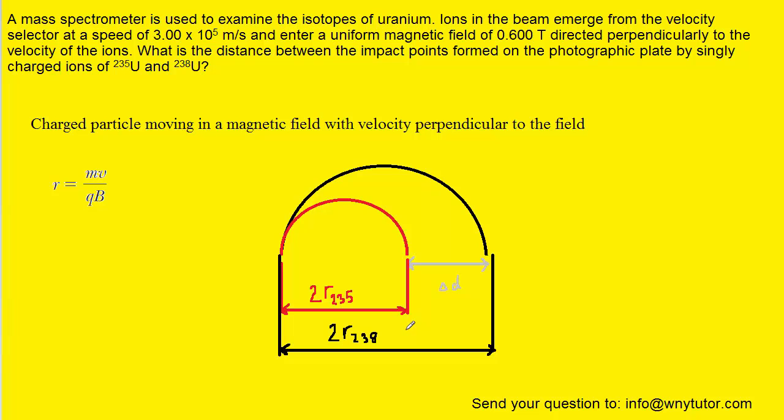Our objective, of course, is to find this distance marked in gray, and so to do that we're simply going to subtract the diameter of the black circular path by the diameter of the red circular path.